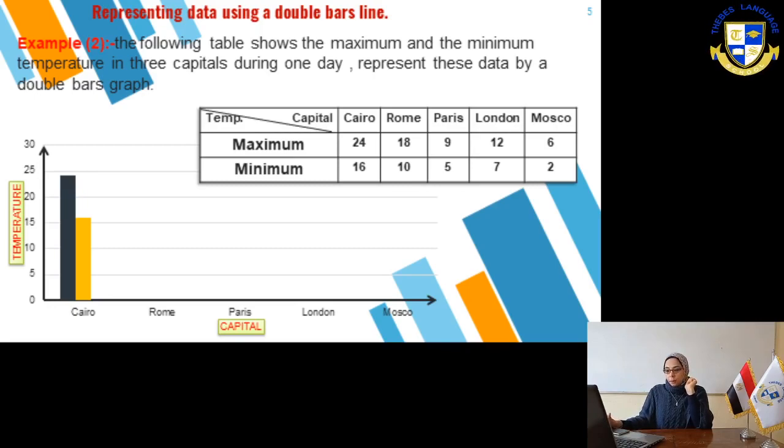And now, Rome. The maximum is 18. Draw the bar till 18. And the other bar till 10. Now, we have double bar for Rome. Paris. The first bar, the maximum temperature, 9, and the minimum 5. Draw the two bars according to these numbers. And so on in London and Moscow.